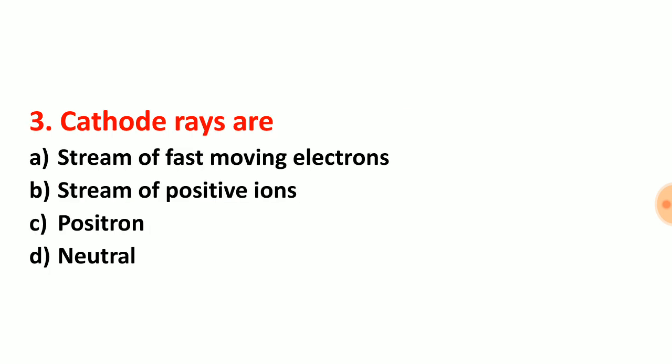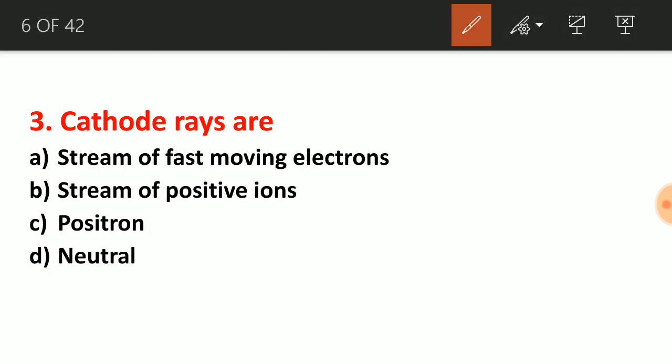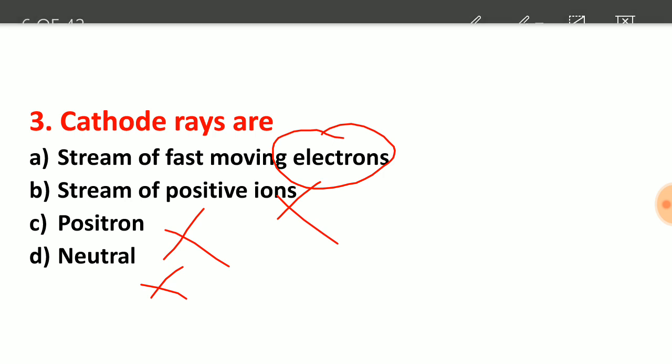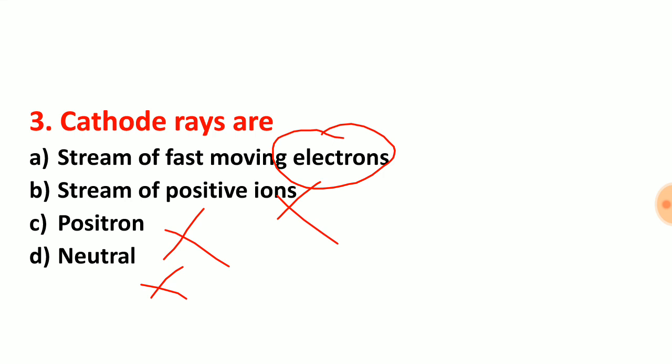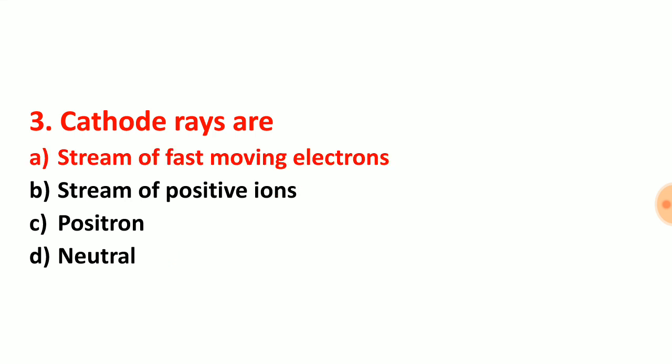Question number 3: cathode rays are — we know that cathode rays are not positive ions, they are not positrons, they are not neutrons, they are simply fast moving electrons. So option choice A is the correct answer for question number 3.